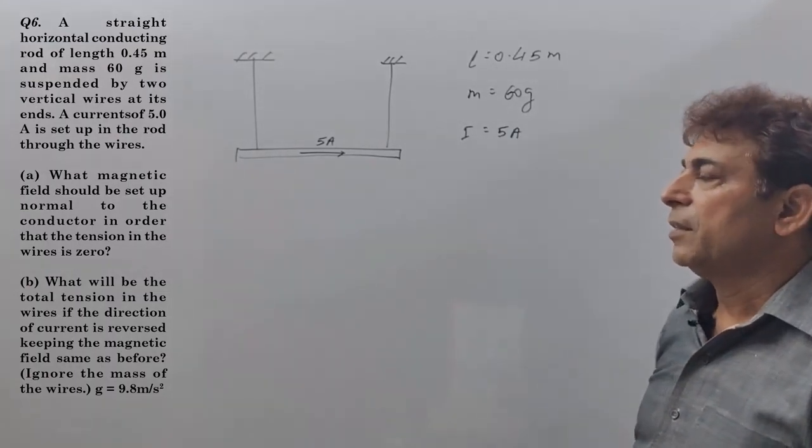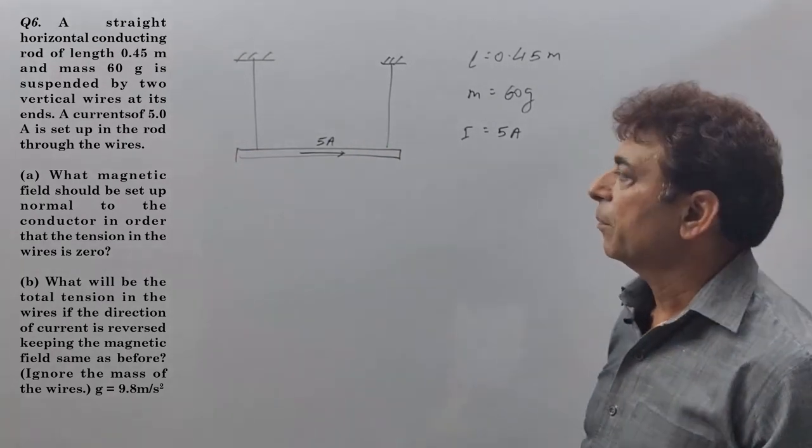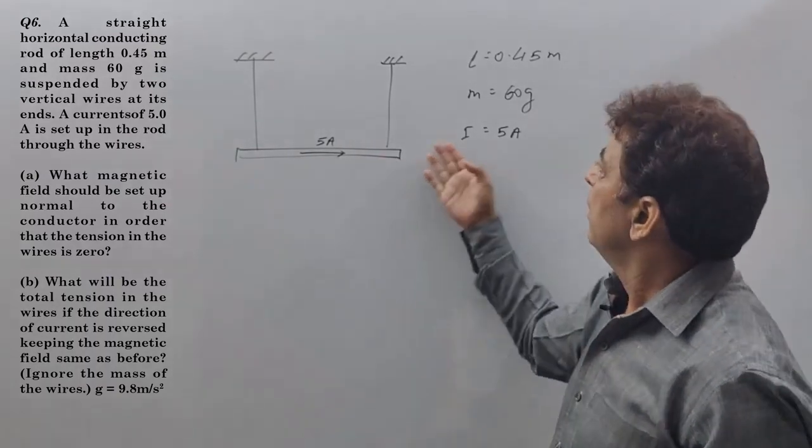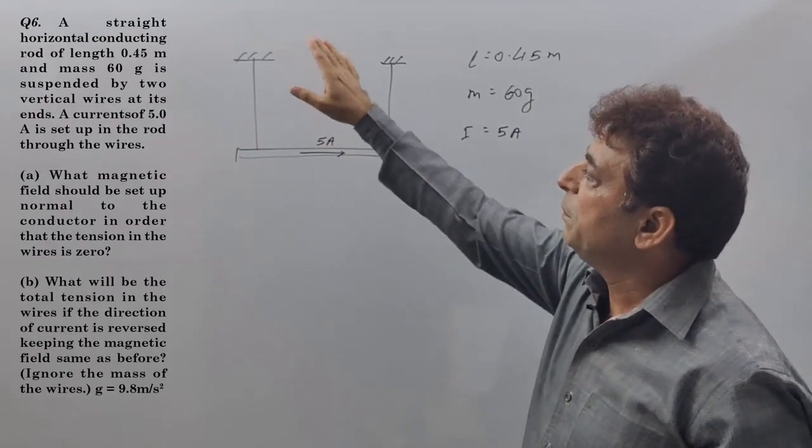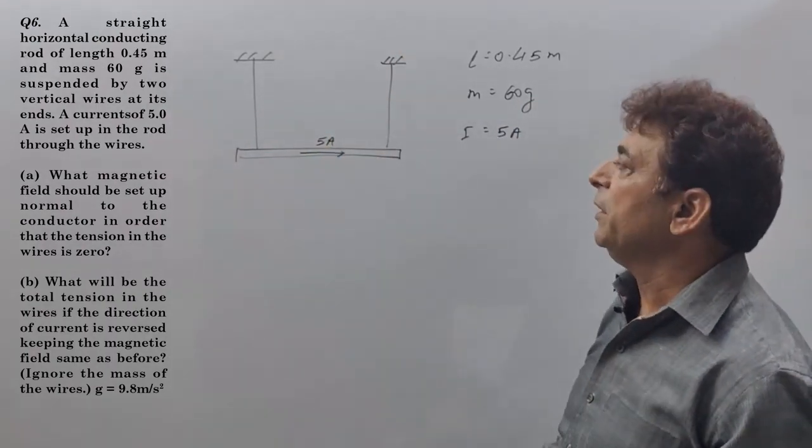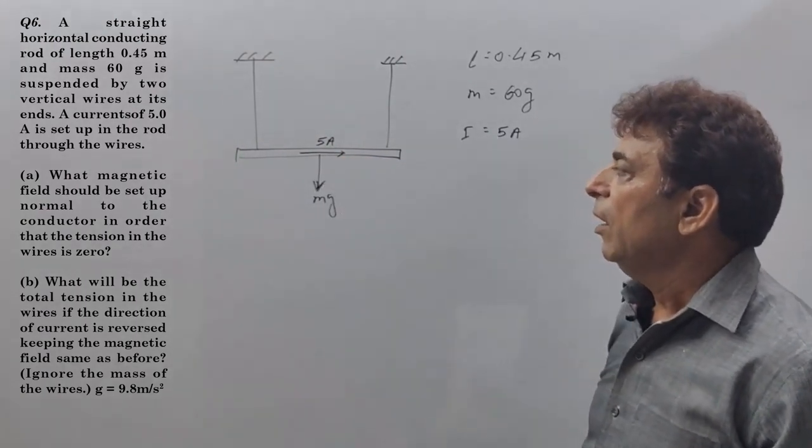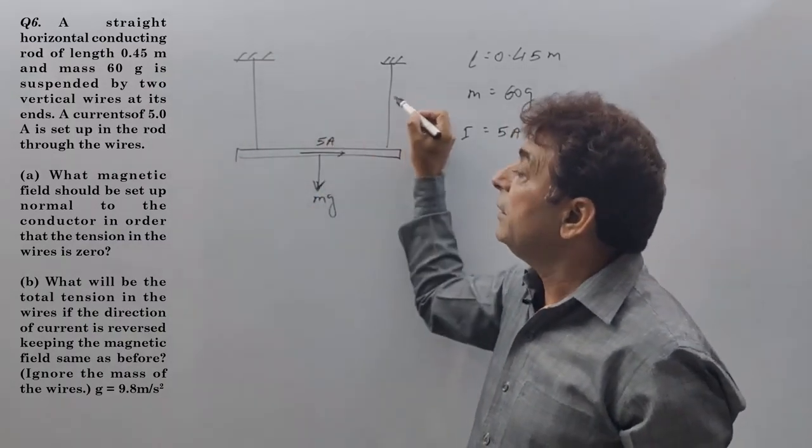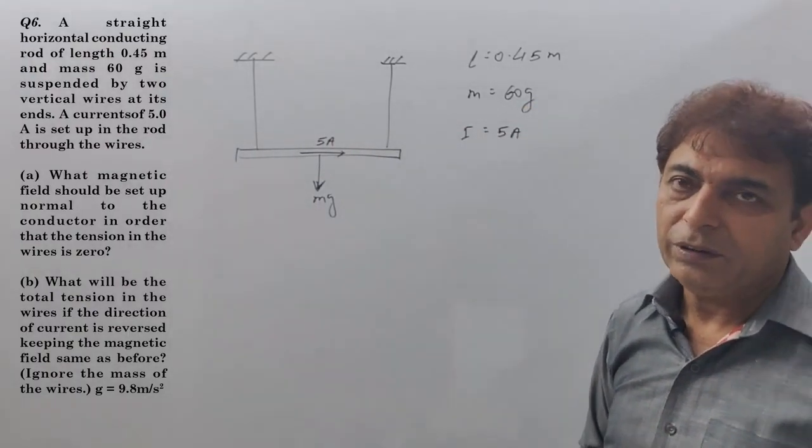Yes. Question is very important. We have a rod having a certain mass 60 gram and the rod is suspended with the help of these two wires. Definitely, the rod has got certain weight mg. And due to this weight, there will be tension in the wires.